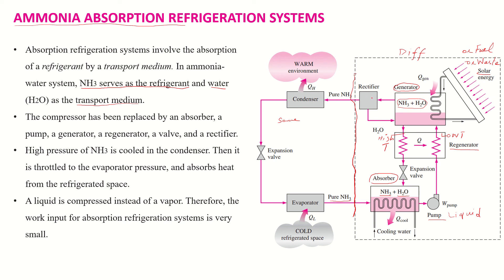The function of the rectifier is to eliminate any water droplets in the ammonia vapors, so that pure ammonia is passed through the condenser. In the condenser, ammonia vapors are converted into liquid by cooling them down, and this process occurs at constant pressure.